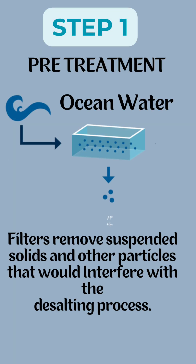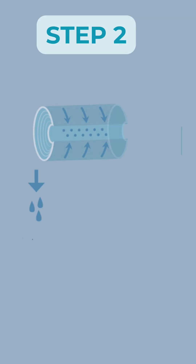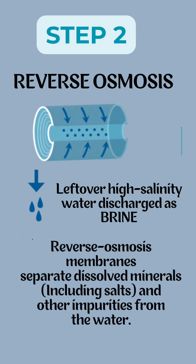Desalination projects address water scarcity by converting seawater into drinkable water. Seawater is first drawn through intake pipes with screens to filter debris. Pre-treatment then removes sediments and microorganisms. The main process uses reverse osmosis or thermal distillation to separate salt from water.